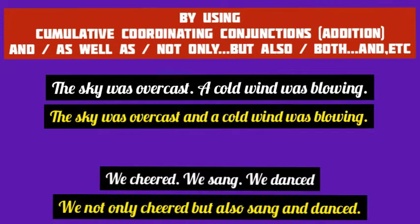The result is the compound sentence: 'The sky was overcast and a cold wind was blowing.' Next we have three separate simple sentences: 'We cheered,' 'we sang,' 'we danced.' We combine them into a compound sentence using 'not only...but also' and 'and': 'We not only cheered but also sang and danced.'